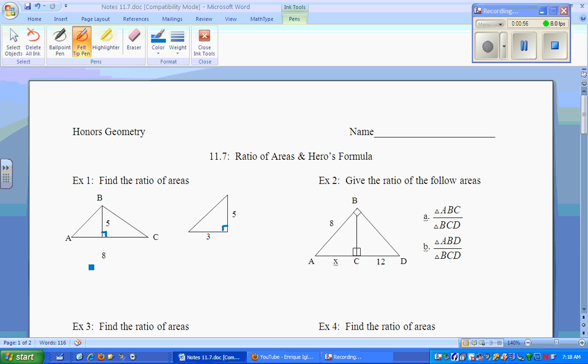We can say I can find the area of this one. We know the area formula is 1 half base times height. So we got 1 half. The base is 8 times the height of 5. Multiply that over, you get 20 for this area. Over here we have a side of 3 and 5. So we multiply 3 times 5 and take half of that. And that ends up being 7.5. So we can compare 20 to 7.5, which reduces to 8 to 3.